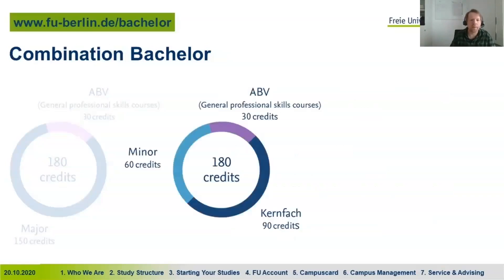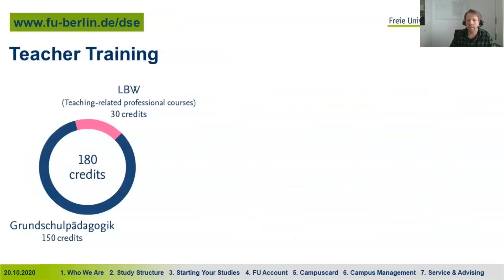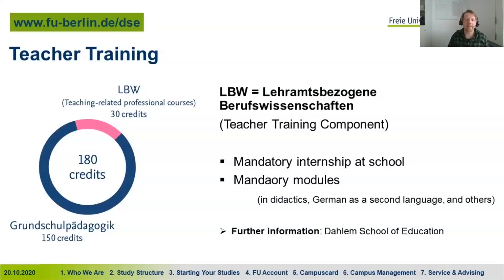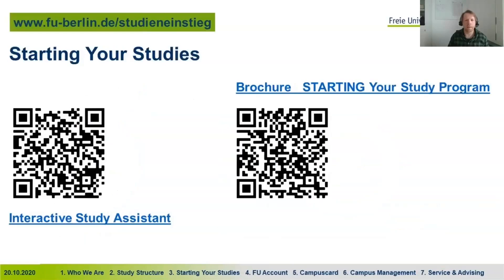If you do a combination bachelor's, you have one major and one minor, or one major and two minors, plus the ABV part. For teacher programs at elementary school level, you do a 180-credit program with a teacher training component including a school internship and mandatory modules. For secondary school teaching, you have a major and a minor, plus the LBW part.